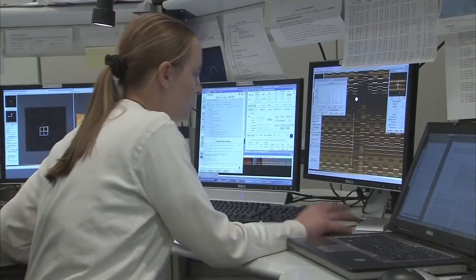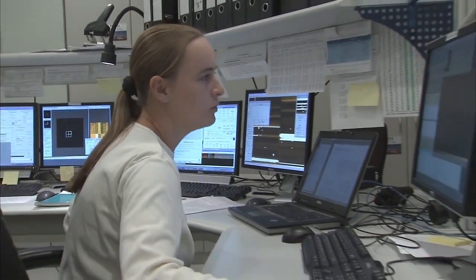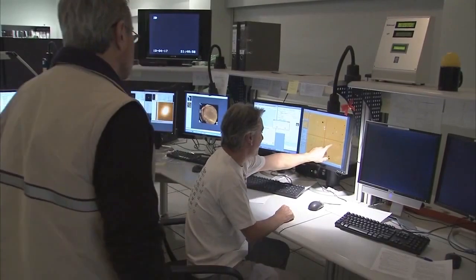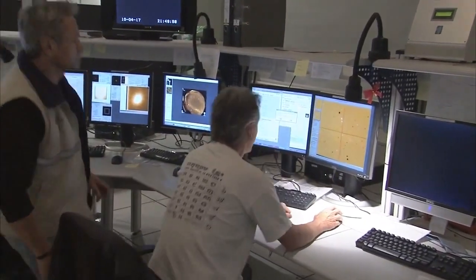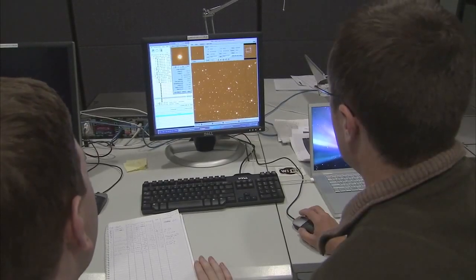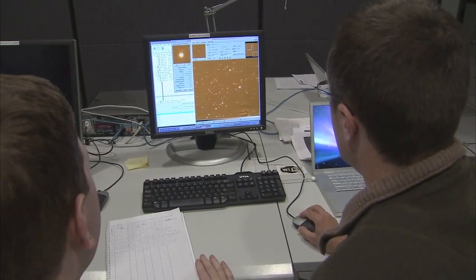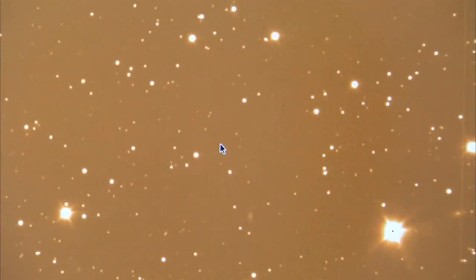The control room of the ESO Very Large Telescope at Paranal. Here astronomers observe the sky using the advanced capabilities of this high-tech installation in the Chilean Atacama Desert.